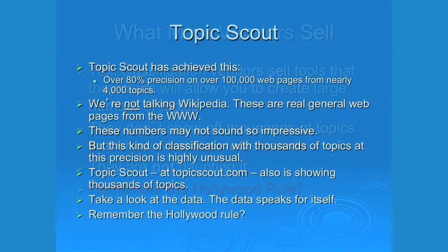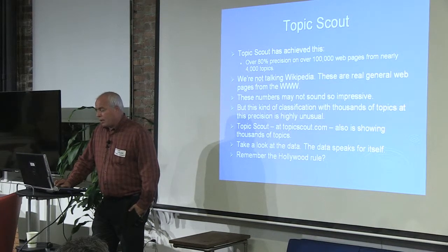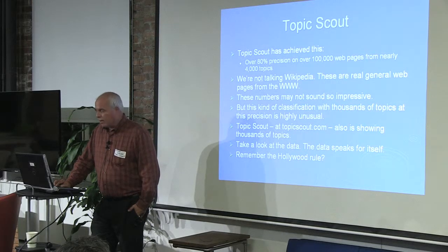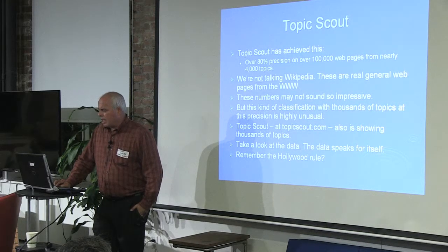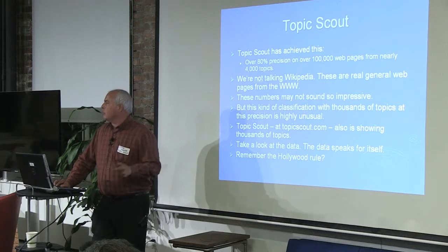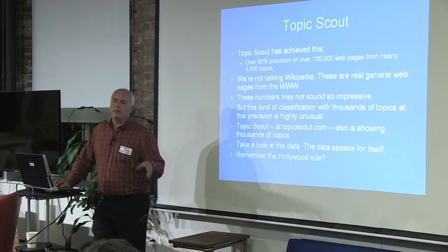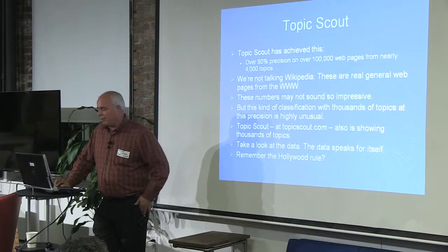TopicScout is built on its own proprietary set of algorithms — it's really not like anything else out there and doesn't use any known techniques for its core work. It has one system of nearly 4,000 topics — 3,750 to be exact — and has achieved 80% precision over 100,000 web pages. Not Wikipedia pages, but pages from all over the web. These numbers may not sound so impressive, but most systems are much smaller.